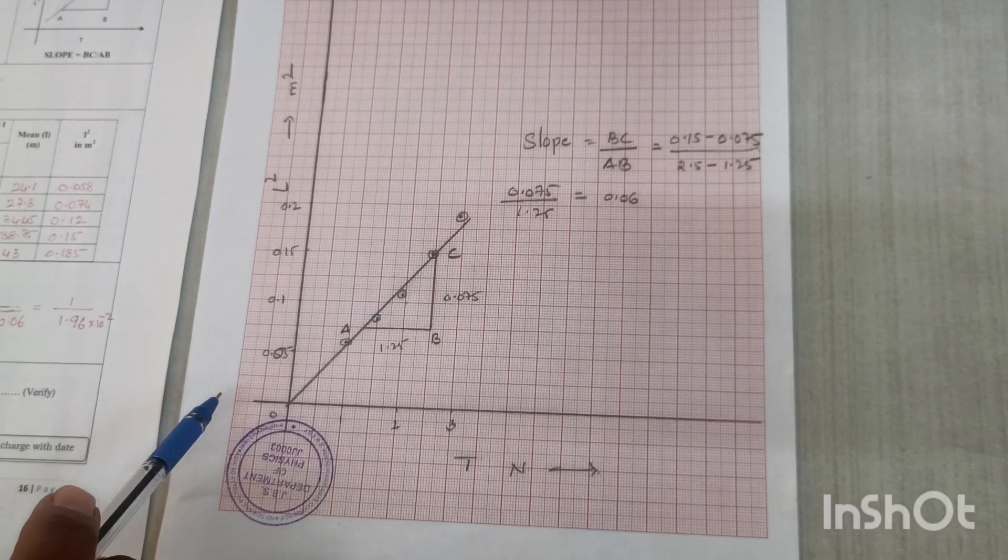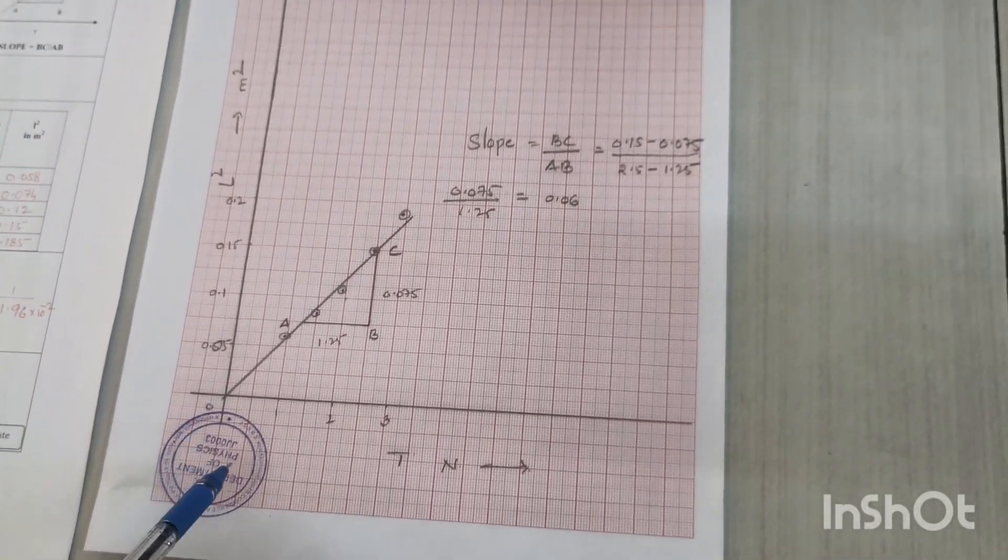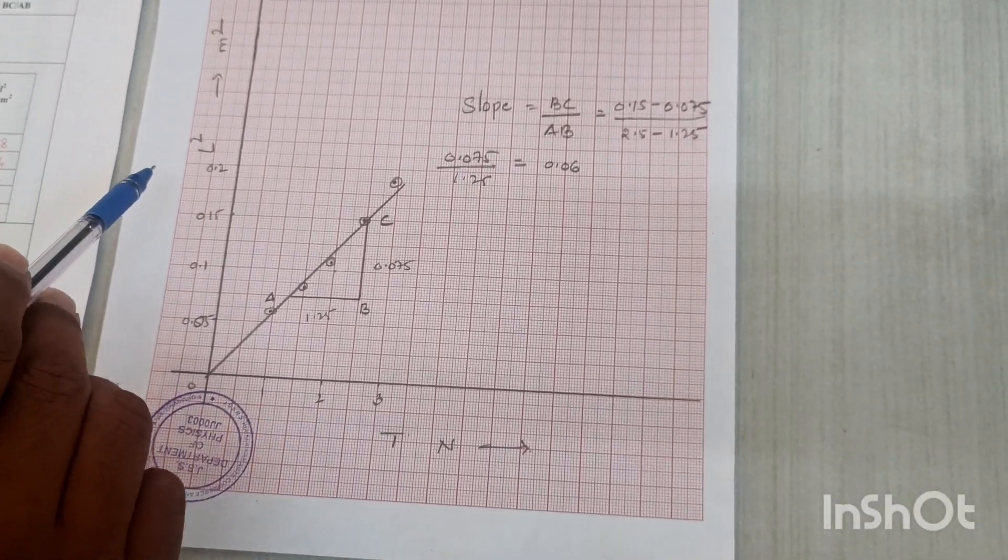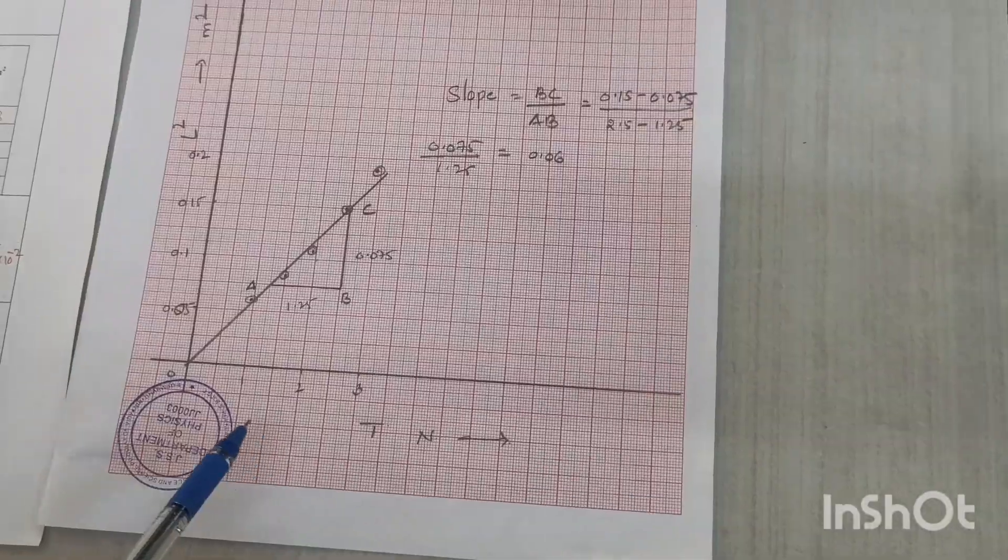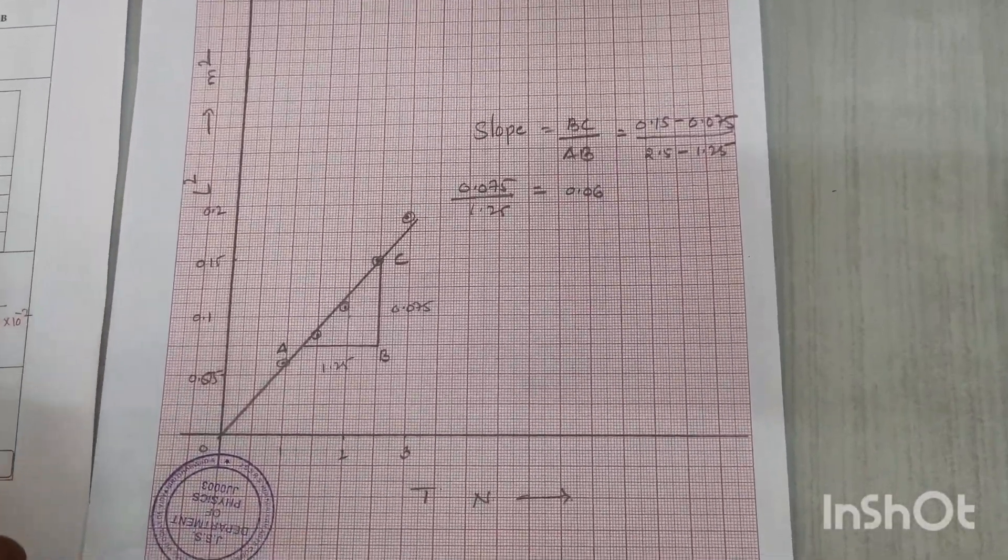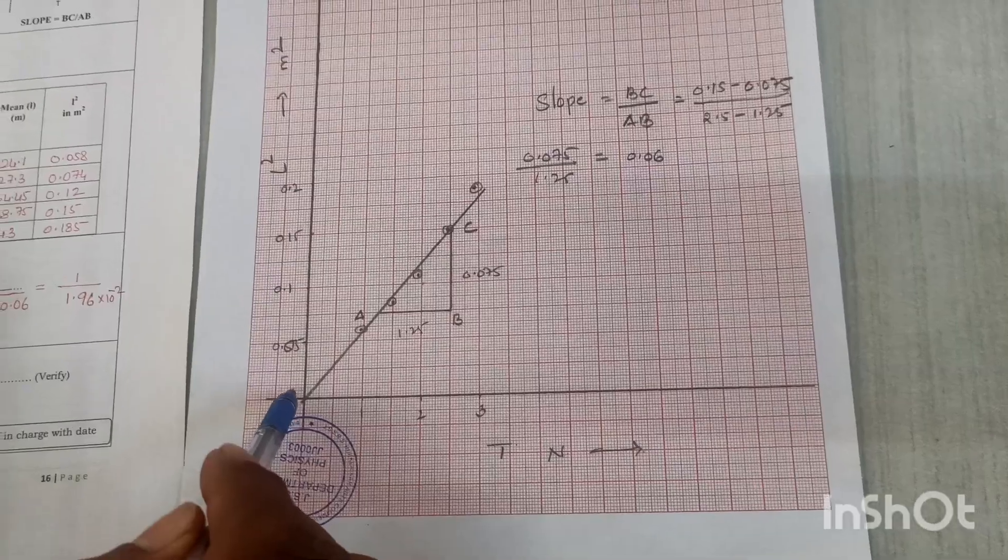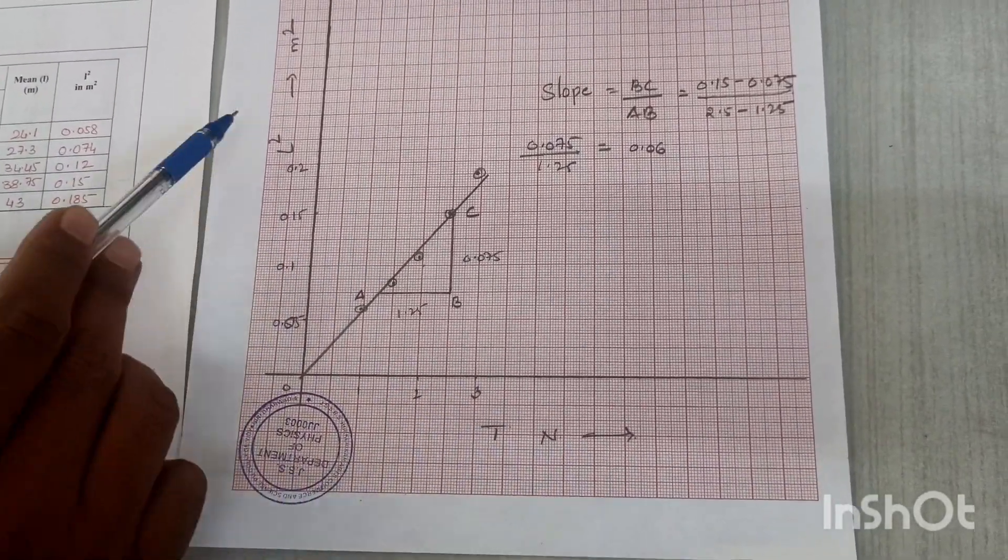Using the values obtained, a graph is plotted for tension versus square of the length L². On the graph sheet, a suitable scale is taken along the x-axis for tension and along the y-axis for L². Tension is in Newtons and length is in meters squared.